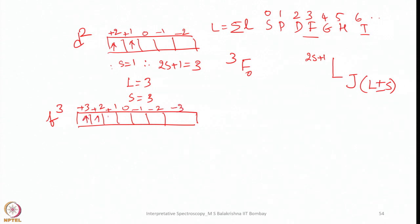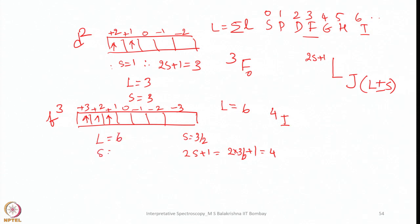For f3, place 3 unpaired electrons in the ground state and calculate L. ΣmL = 6, so the term is I. With 3 electrons, S = 3/2, so 2S+1 = 4. Since f3 is less than half-filled, J = L−S = 6−3/2 = 9/2. This gives the ground state term symbol ⁴I₉/₂.